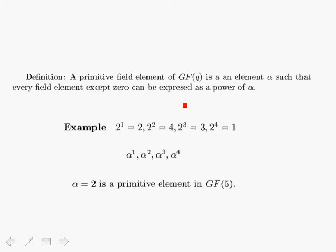We define a primitive field element within GF(Q) as an element alpha such that every field element except 0 can be expressed as a power of alpha. Every Galois field of Q elements has a primitive element alpha, in which all other Q−1 elements (excluding 0) can be generated as powers of alpha.